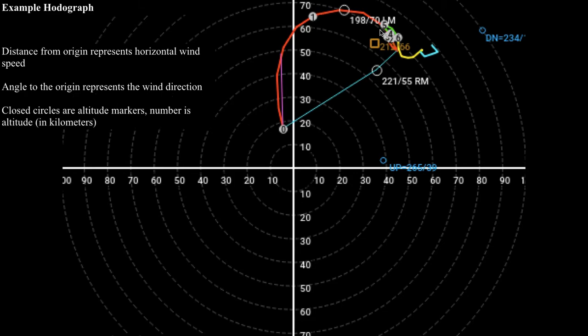And these closed circles that have the numbers in them, those are altitude markers, and that tells you what the altitude of that particular wind speed is in kilometers. So right around at zero kilometers, which is basically ground level, the wind is pretty close to 20 knots, I'd say about 17 knots south-southeasterly wind. At about one kilometer, we've got a wind that's about 65 knots, and that's about a south-southwesterly wind.